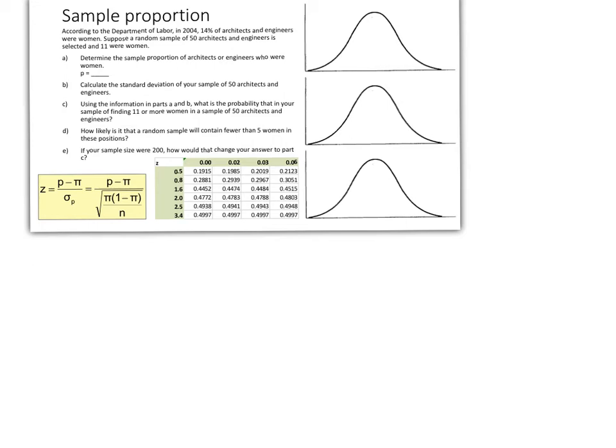Here we have a sample proportion problem where π equals 14%, representing architects and engineers who are women in 2004. This is from a Department of Labor study. Suppose a random sample of 50 architects and engineers is selected and 11 are women.